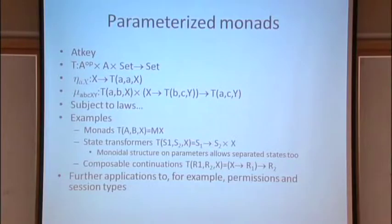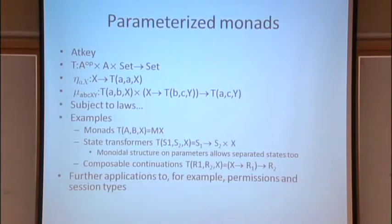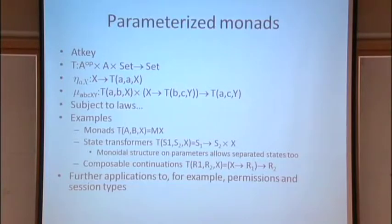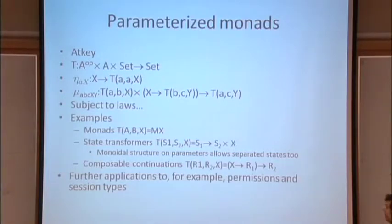There are lots of other nice examples. One obvious example is state transformers where the type of the state is allowed to change during computation. T of S1, S2, and x is something that takes you from states of type S1 to values of type x paired with states of type S2. If you put some monoidal structure on these parameters, you get a very nice type system and semantics for separated computations, where one computation works on one part of the state and another works on a different part.